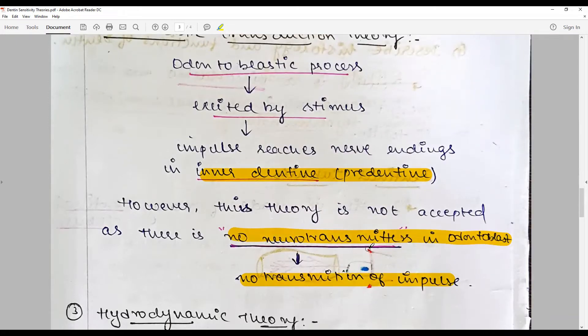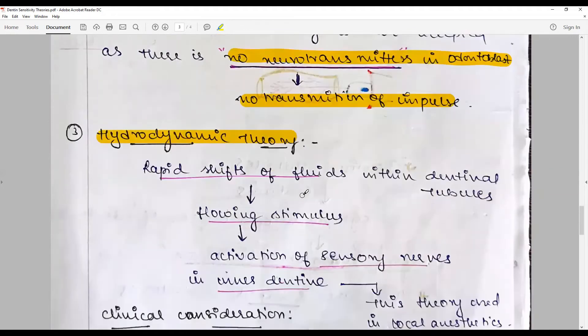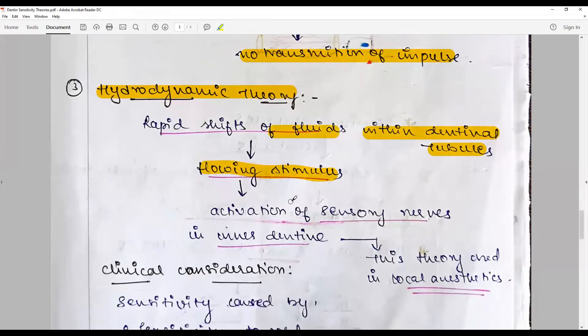The most accepted is the hydrodynamic theory and is the most recent theory, which says that there is a rapid shift of fluids within the dentinal tubules. The dentinal tubules are filled with a type of fluid called dental lymph, and there is a flowing of stimulus. Whenever there is a change in the oral environment, there is an ion, and that ion is passed on via the enamel lamellae and cracks to the DEJ.